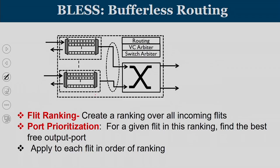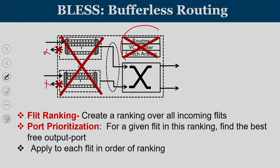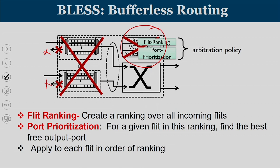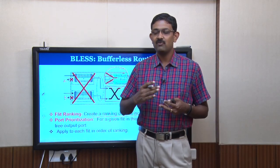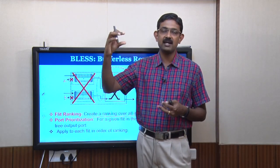In the traditional input buffered virtual channel router, we are trying to get rid of the virtual channels. If the virtual channel is not there, the credit outflow is also not required. We can get rid of the traditional control logic, and that has to be replaced with a flit ranking policy and a port allocation policy. Flit ranking means creating a ranking over all the incoming flits — we have to order whatever flits are received inside a router.